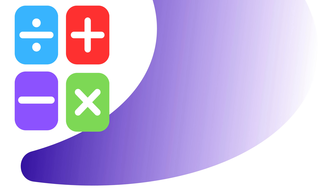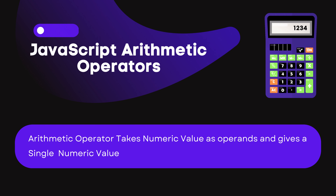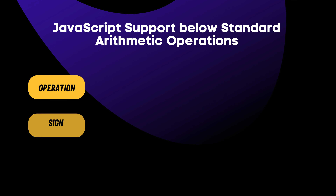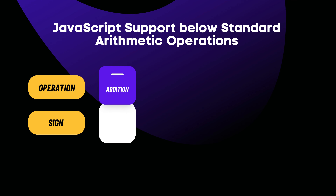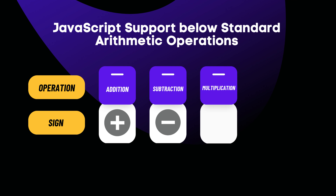Hello everyone. In this video, let's discuss arithmetic operators in JavaScript. Arithmetic operators take numeric values — numbers — as operands and return a single numeric value. JavaScript, like other programming languages, supports standard arithmetic operators: addition (+), subtraction (-), multiplication (*), and division (/).